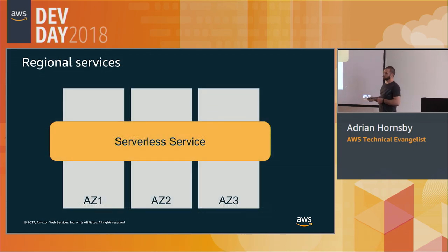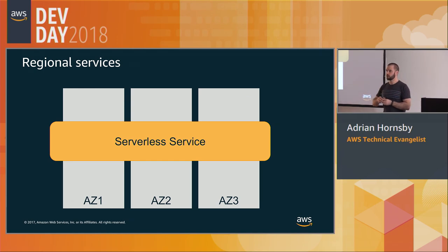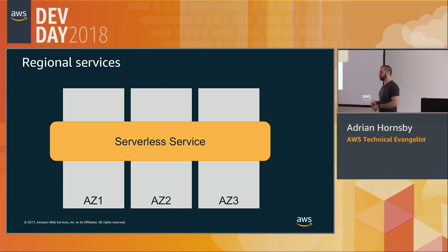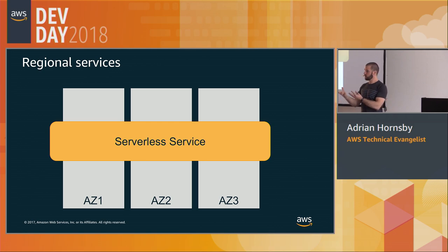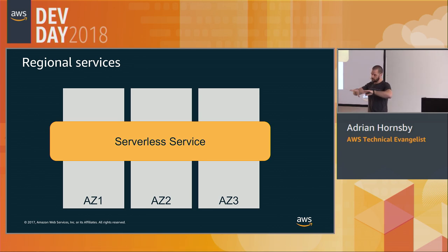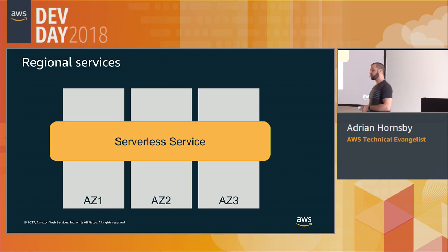You might not know, or maybe it's not obvious, but when we talk about serverless services, under the hood they are built on top of three AZs — availability zones. Each of those AZs are separated by a couple of milliseconds and are actually geographically separated. An AZ can be one data center, but also there are regions where an AZ is a cluster of data centers. Each of those AZs are geographically separated, with different electrical grid, different flood plains, different earthquake plains.